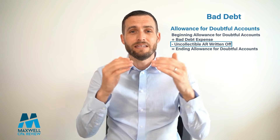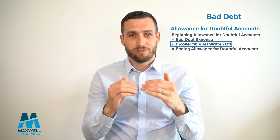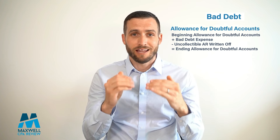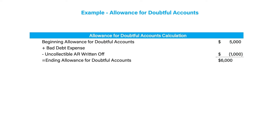When we write off AR as uncollectable, we decrease allowance for doubtful accounts. Here we have the formula for allowance for doubtful accounts. Imagine that our beginning balance is $5,000, our ending balance is $6,000, and we've written off $1,000.